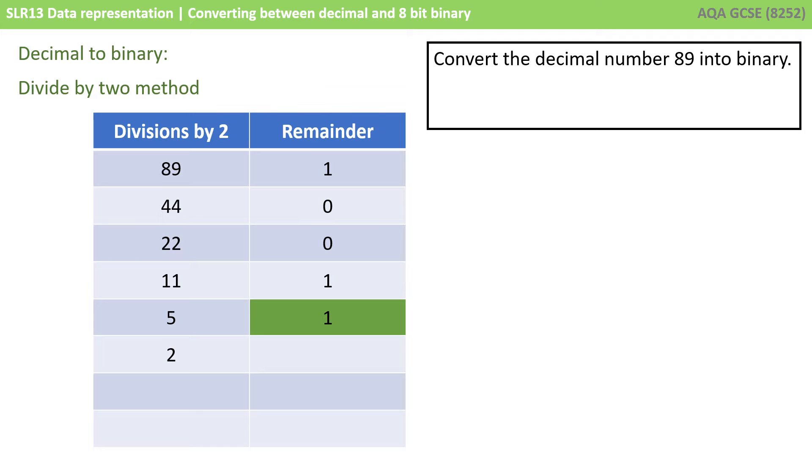5 divided by 2 is 2 with 1 remaining. 2 goes into 2 once with 0 remaining. And finally, 1 divided by 2 is nothing with the whole number 1 remaining.